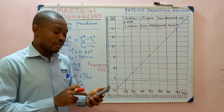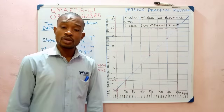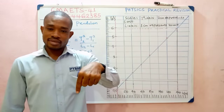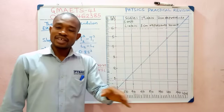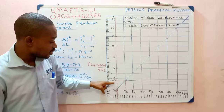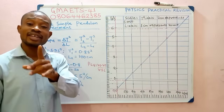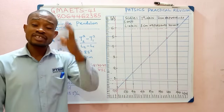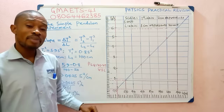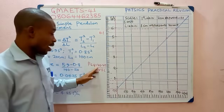Now divide 0.806 by the value of each small line along the vertical axis, which is 0.1. How do we know each small line is 0.1? The unit selected for the vertical axis is 1, and between two centimeters there are 10 small lines. So: 1 divided by 10 = 0.1 per small line. Dividing 0.806 by 0.1 gives 8.06.